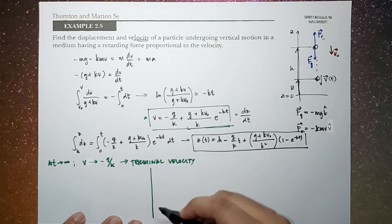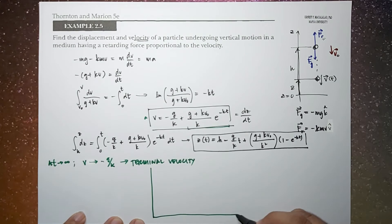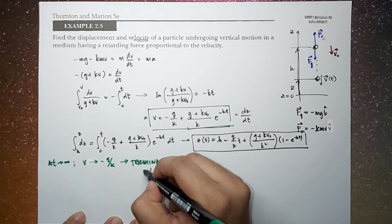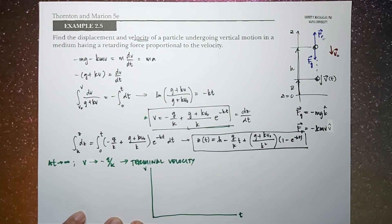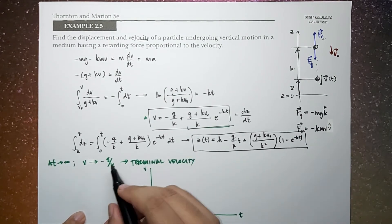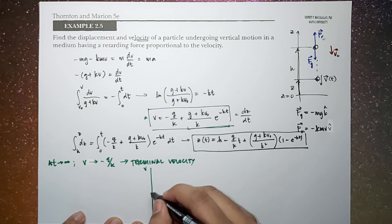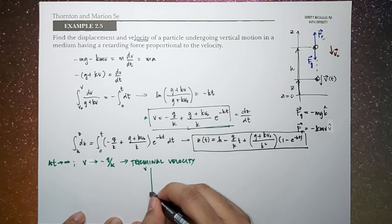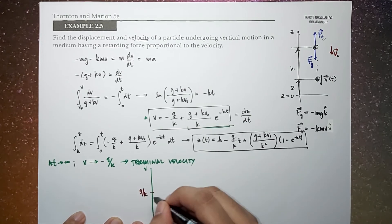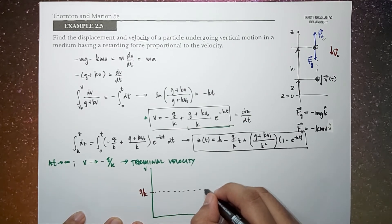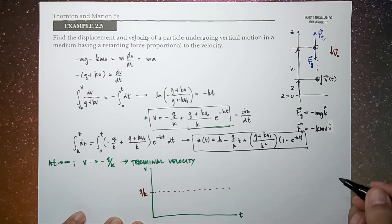If we graph that, with time on one axis and speed on the other — remember, this is speed — the speed of the terminal velocity would be equal to g over k. So g over k is your limiting value on the graph.